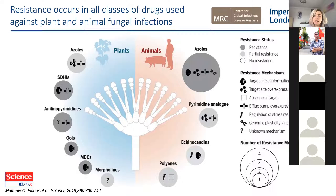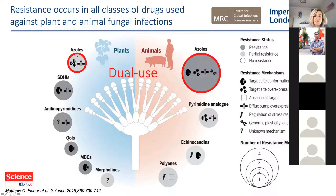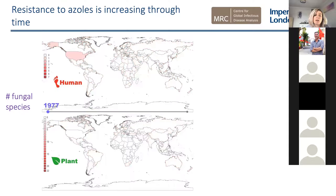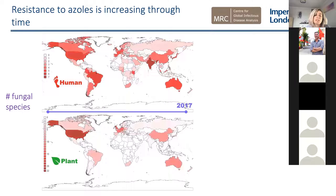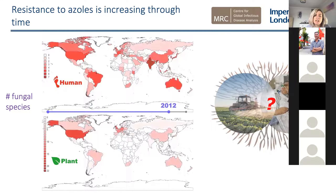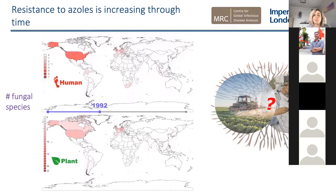The six main classes of fungicides are the morpholines, azoles, MBCs, QoIs, and two others. Basically you've got dual use of these azoles both in agricultural settings and in animal and human settings — a bit like the antibiotic problem, where we use antibiotics agriculturally to fatten livestock but also medically. Resistance to azoles has increased throughout time in both animal and human diseases, and we are really interested in testing this hypothesis that human fungal infections that are drug resistant are originating in the environment. Apparently this is a controversial topic.